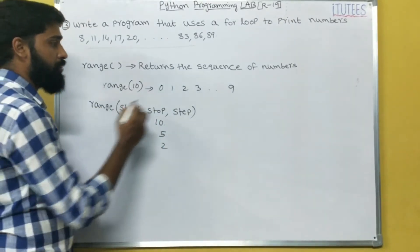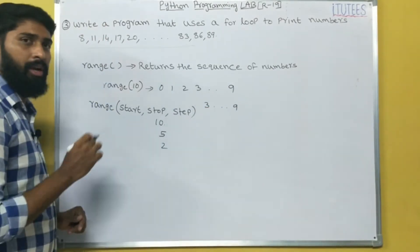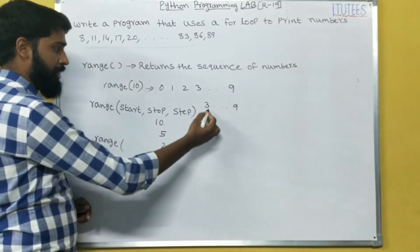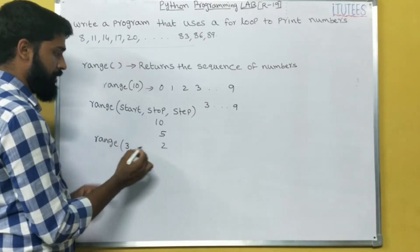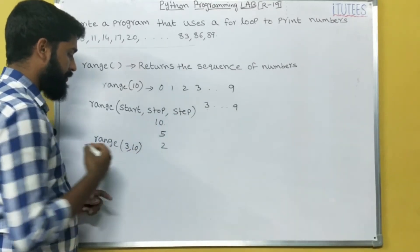So for example, I want to start from 3 to 9. Then how you can write? Range of, what is the starting value? 3. What is the ending value? 9, so plus 1, so 10.